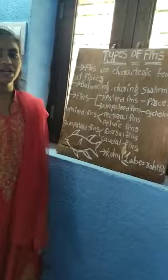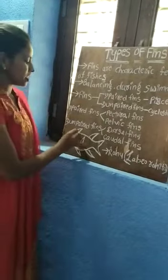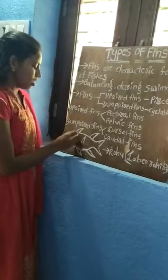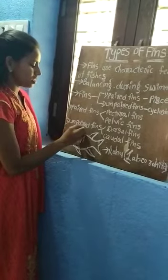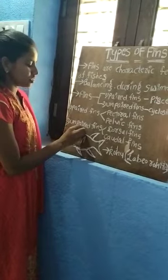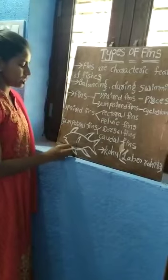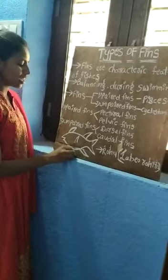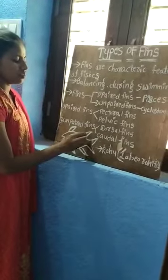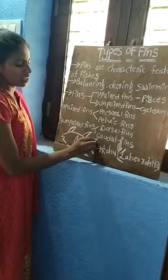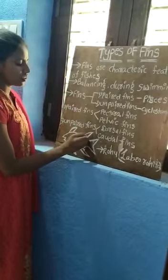What are pectoral fins? Pectoral fins are present on the surface of the fish. They are the fins which are nearest to the mouth. Those are the pectoral fins. The fins which are far from the mouth, closer to the tail, are the pelvic fins.